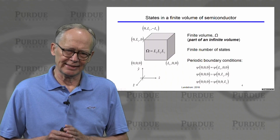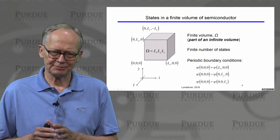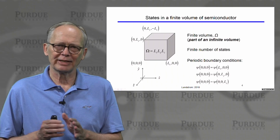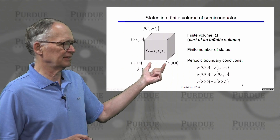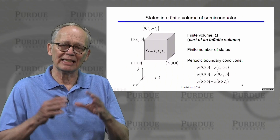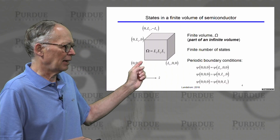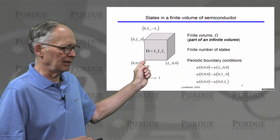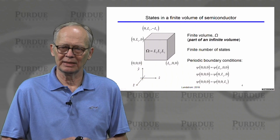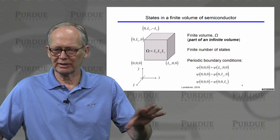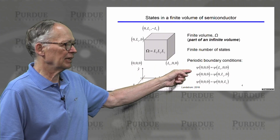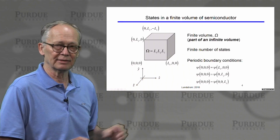We want to count the states. There are different ways of doing this — they all give the same answer. I'm going to take one particular way that makes a lot of physical sense. Since this is a piece of a volume from an infinite solid, I'm going to assume that at one end of the solid and at the other end, the wave function is the same. We'll assume periodic boundary conditions so that everything repeats itself in the x, y, and z directions.